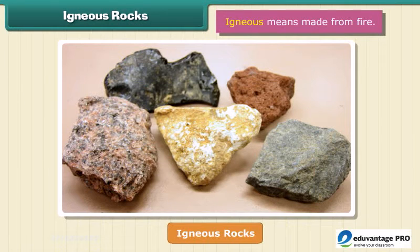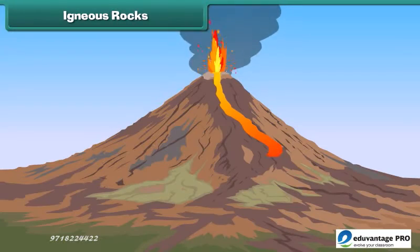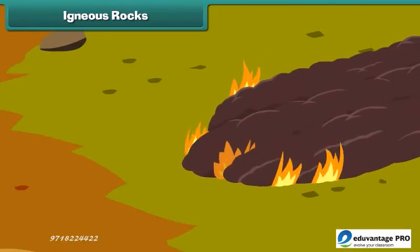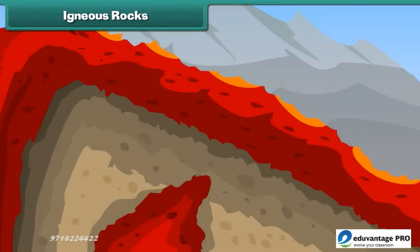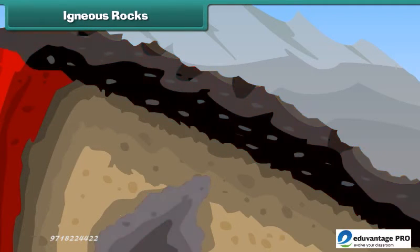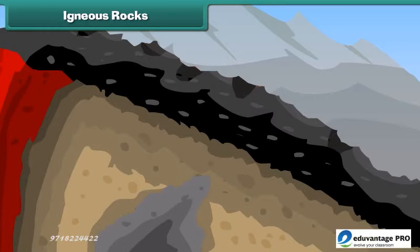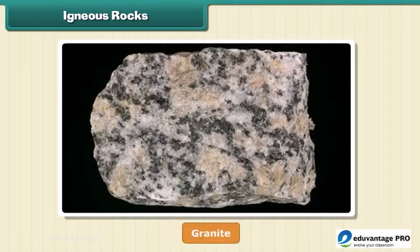Igneous means made from fire. When volcanoes erupt, it causes the liquid rock to rise above the ground. When this liquid rock is present inside the earth, it is called magma. This magma cools and becomes solid. Rocks thus formed are called igneous rocks. They are also called primary rocks. Granite is an example of igneous rock.